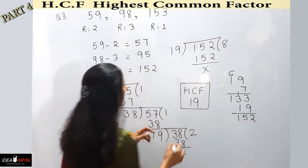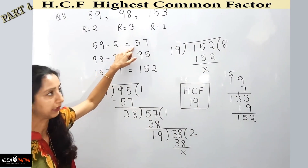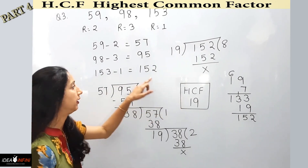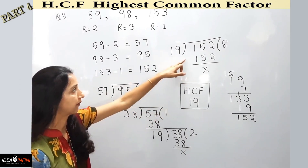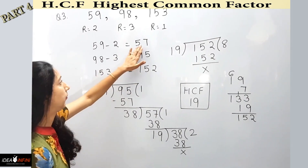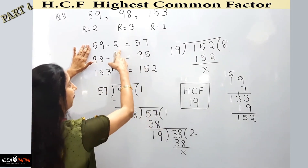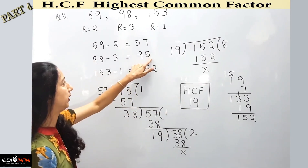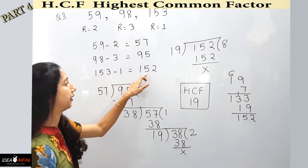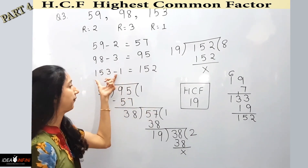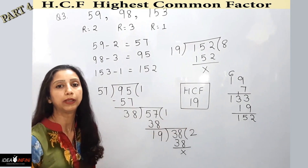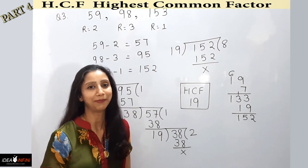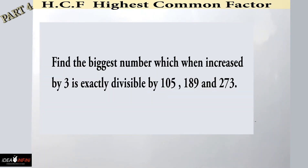We can verify: 57 divided by 19 gives a whole number, 95 divided by 19 leaves no remainder, and 152 divided by 19 equals 8 exactly. Going back to the originals: 59 divided by 19 leaves remainder 2, 98 divided by 19 leaves remainder 3, and 153 divided by 19 leaves remainder 1. So 19 is the required answer.